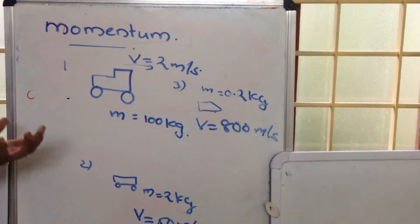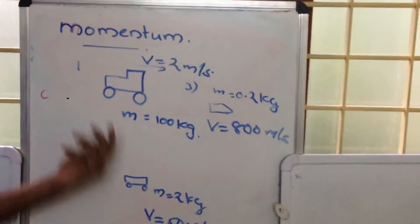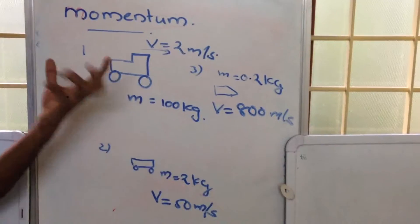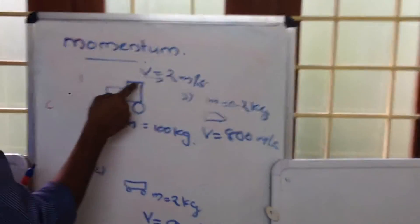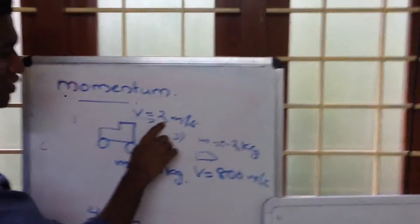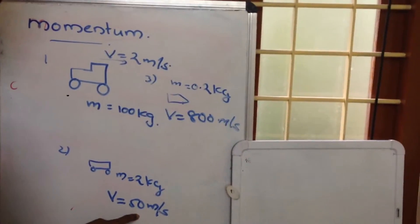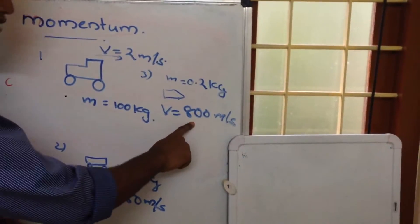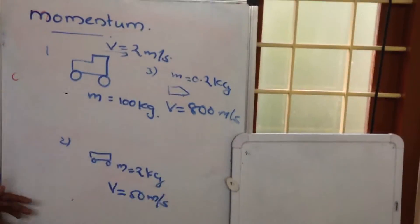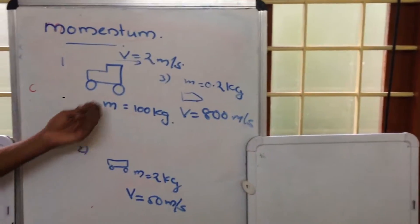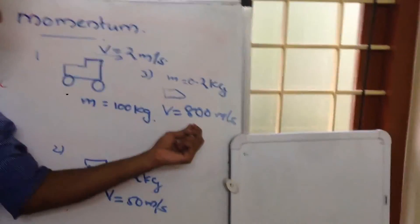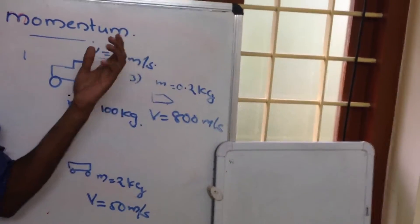And we are asking the question: which of these three bodies possesses the maximum motion? If you are looking at velocity, the velocity of this vehicle is very small, the toy's is somewhat greater, and the velocity of the bullet is very much greater. But when we are looking at mass, the mass of the vehicle is very large but the mass of the bullet is very small.